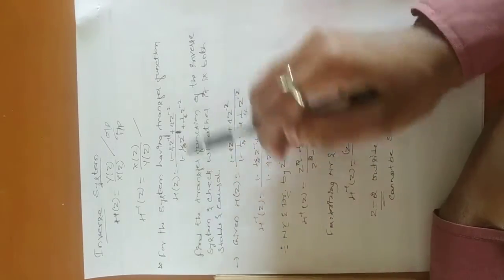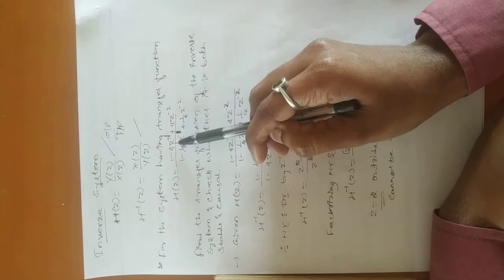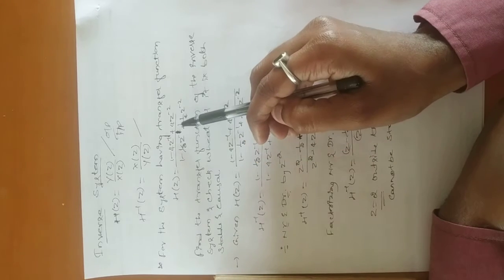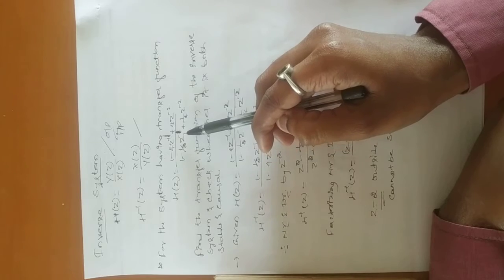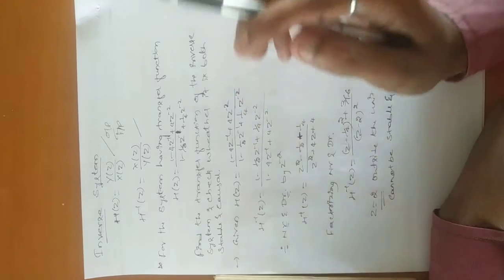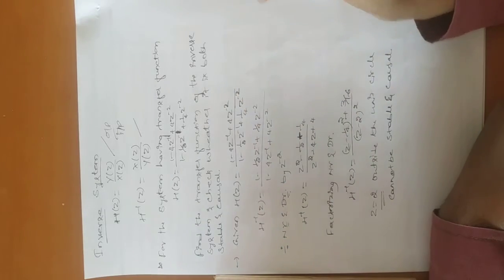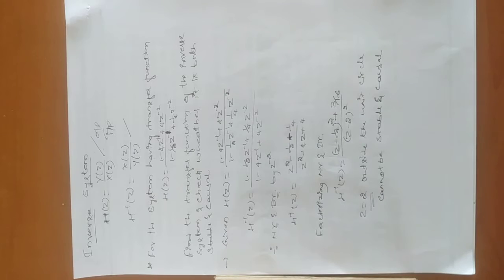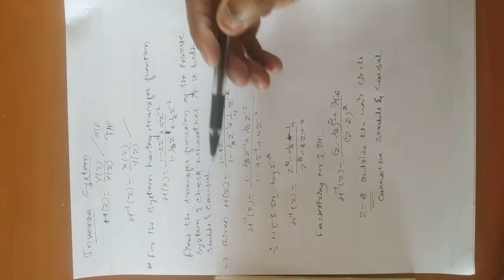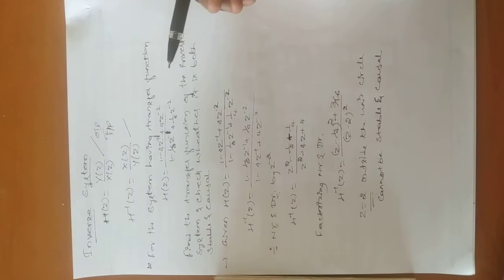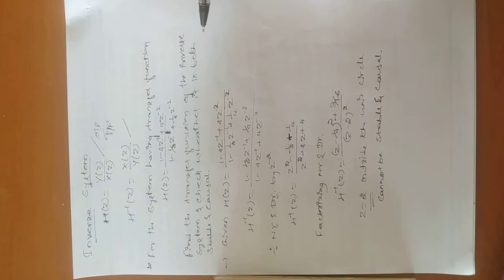For the system having a transfer function H(z) = (1 - 4z⁻¹ + 4z⁻²) / (1 - (1/2)z⁻¹ + (1/4)z⁻²), we need to find the transfer function of the inverse system and check whether it is both stable and causal — whether the poles lie inside or outside the unit circle.